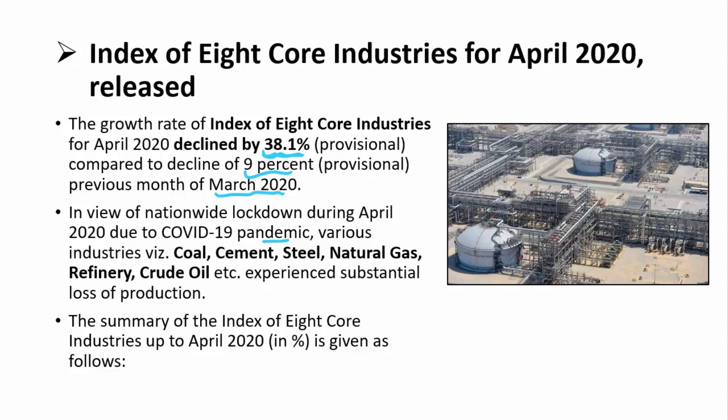In view of the nationwide lockdown during April 2020 due to the COVID-19 pandemic, various industries — coal, cement, steel, natural gas, refineries, and crude oil — suffered significantly. Two major reasons were: first, the international market crisis; second, logistical and transportation problems due to the lockdown. Additionally, demand in these sectors also decreased considerably.